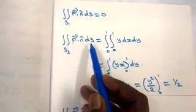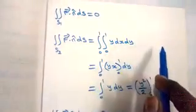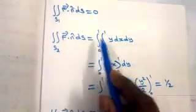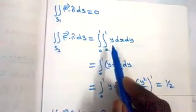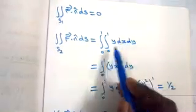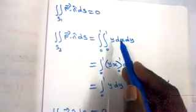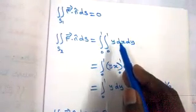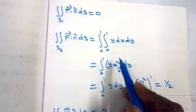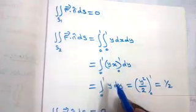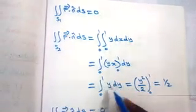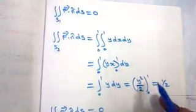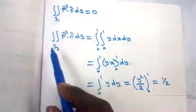Double integral over S2: f·n = y and ds = dx dy, with x from 0 to 1 and y from 0 to 1. Integrating with respect to x gives y·x evaluated 0 to 1 = y. Integrating with respect to y gives y²/2 evaluated 0 to 1 = 1/2. So the double integral over S2 = 1/2.